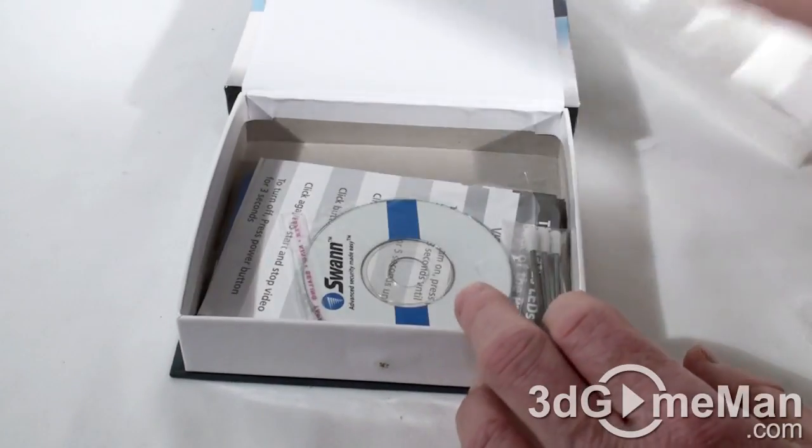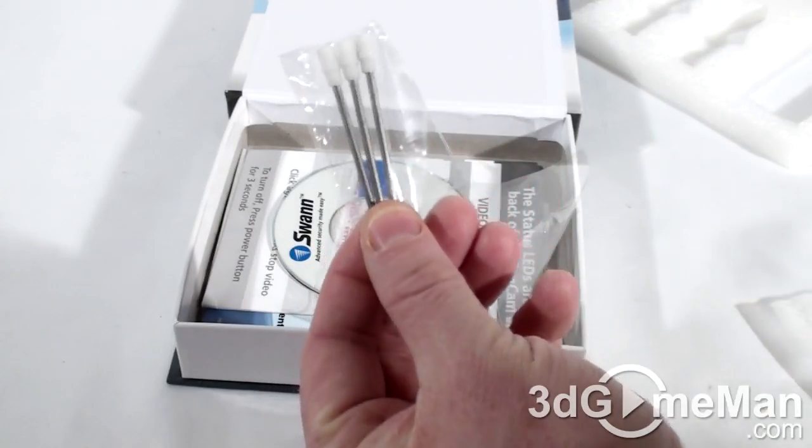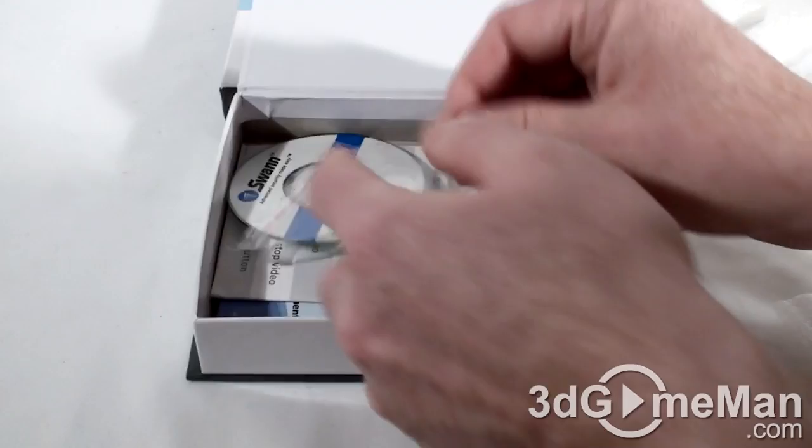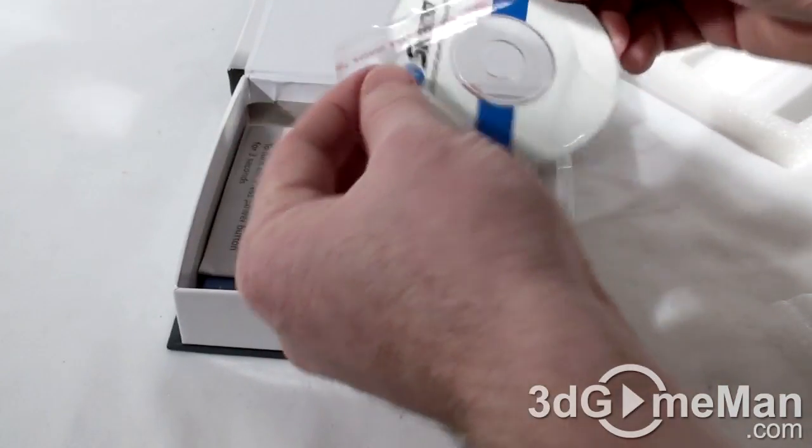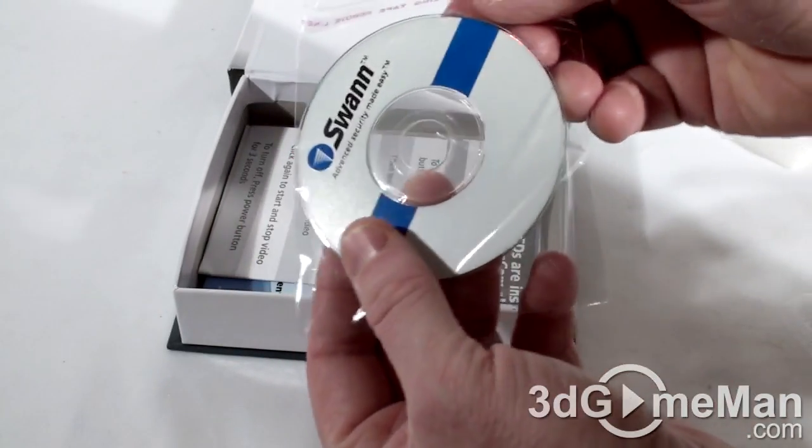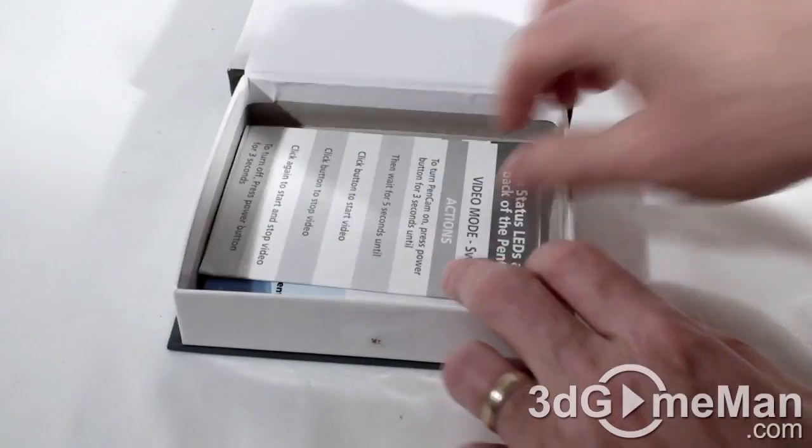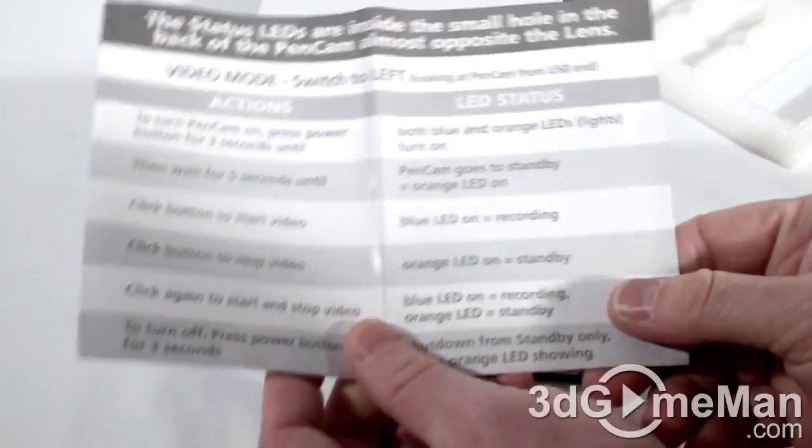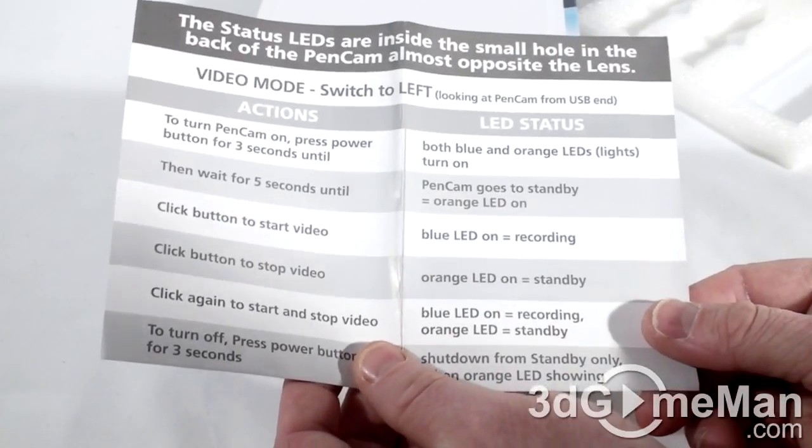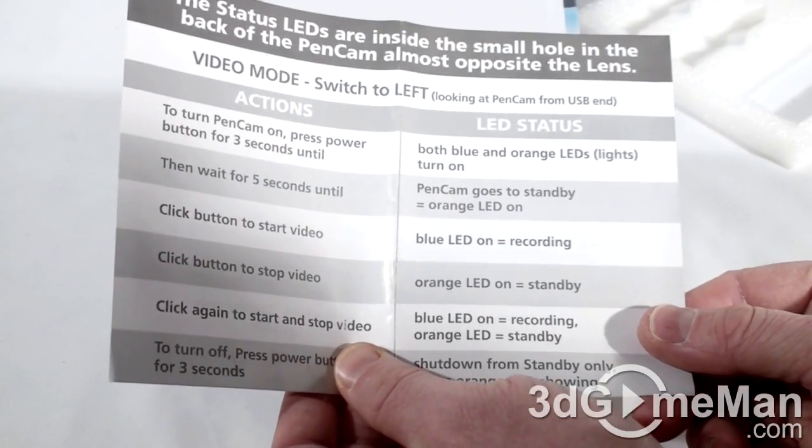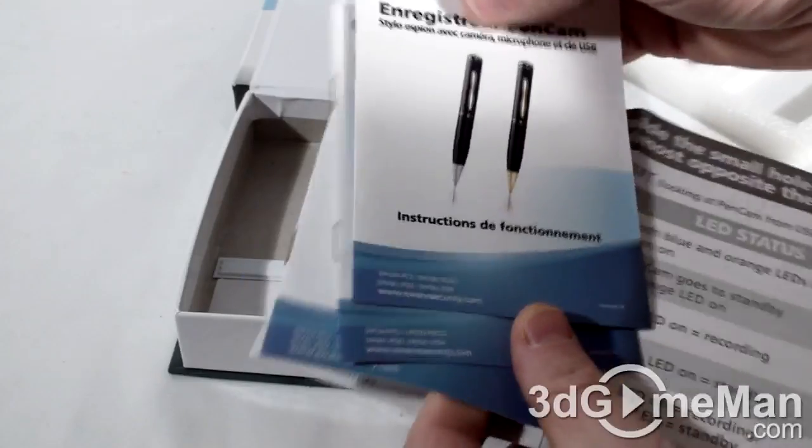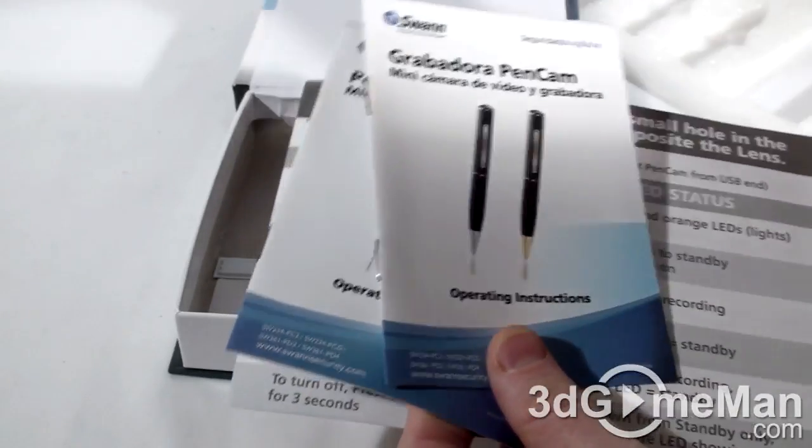What else do we have in here? Oh, look at this, three pen refills. An installation disk. I guess we'd consider this a quick start guide, shows you the status LEDs, and we have the more detailed user's manual.